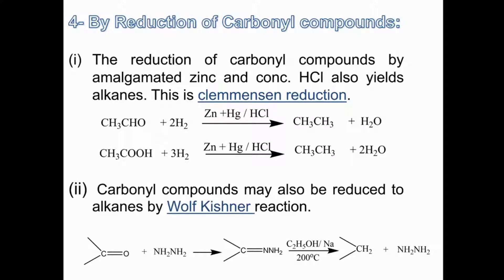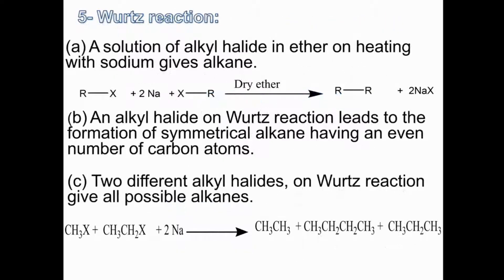Carbonyl compounds may also be reduced to alkanes by the Wolff-Kishner reaction. If you have a ketone and react it with hydrazine, you make a hydrazone, then react with ethanol and sodium at 200°C to get alkanes as product. So alkanes can be obtained by reduction via either Clemmensen reduction or Wolff-Kishner reduction.